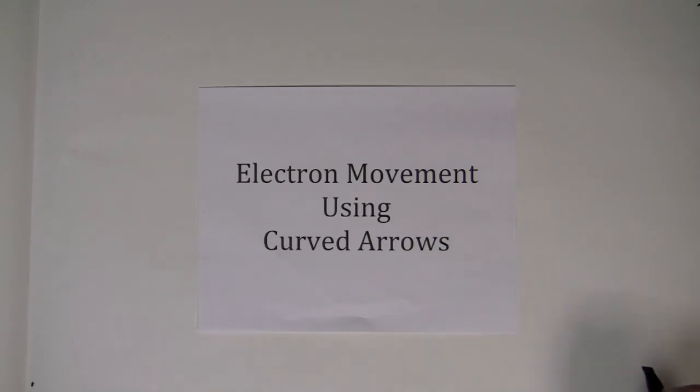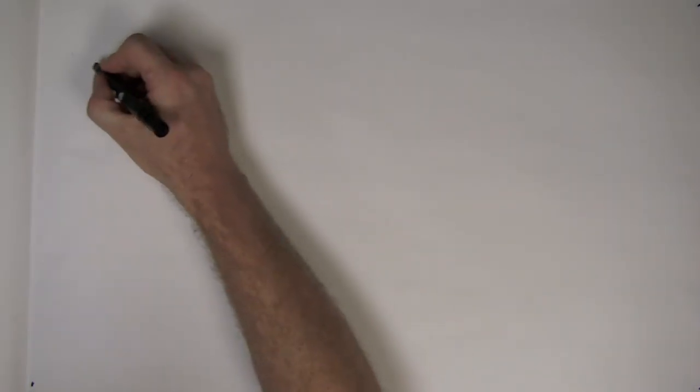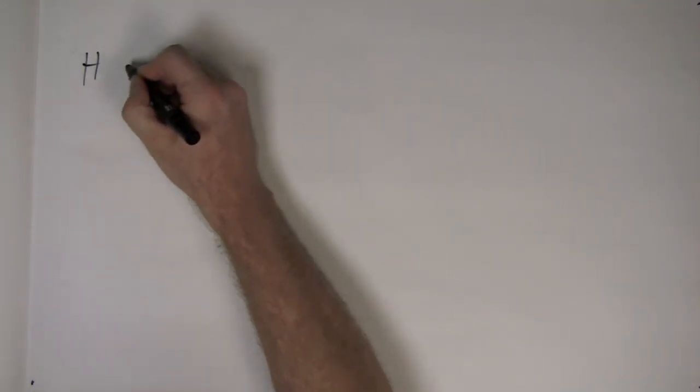This organic chemistry video brief covers electron movement using curved arrows. First let's examine the standard acid-base reaction of HCl and NaOH.